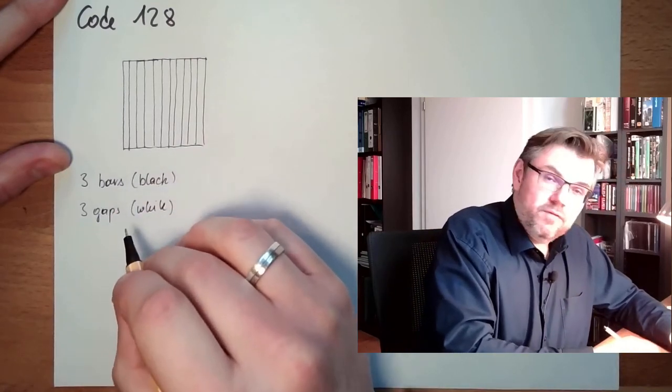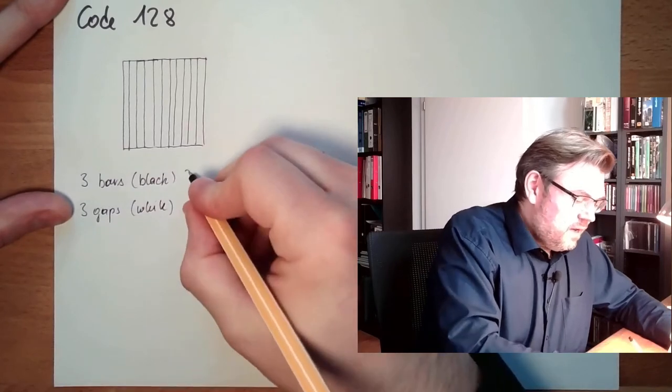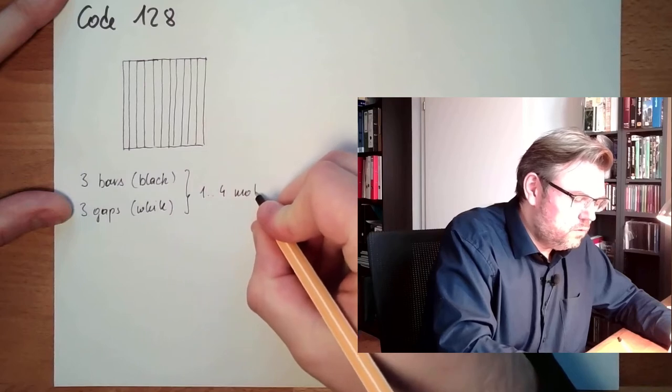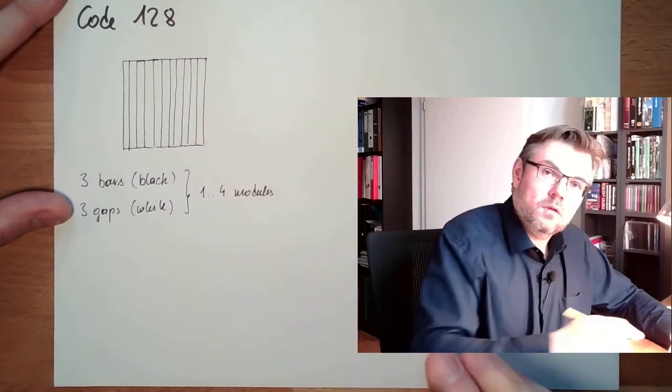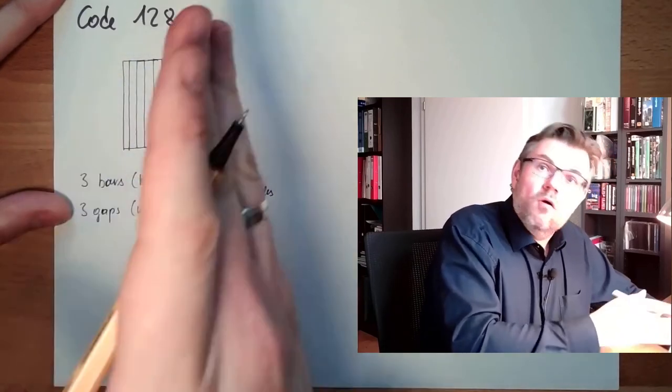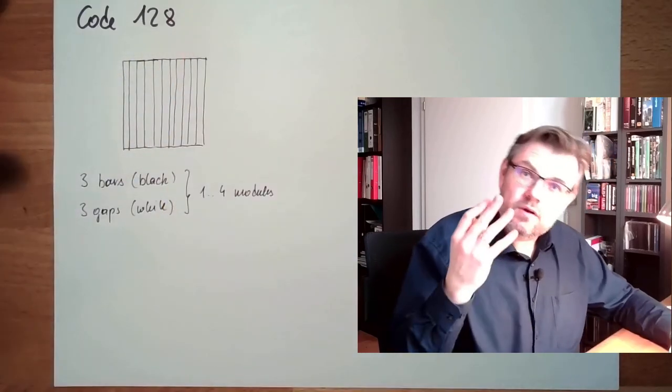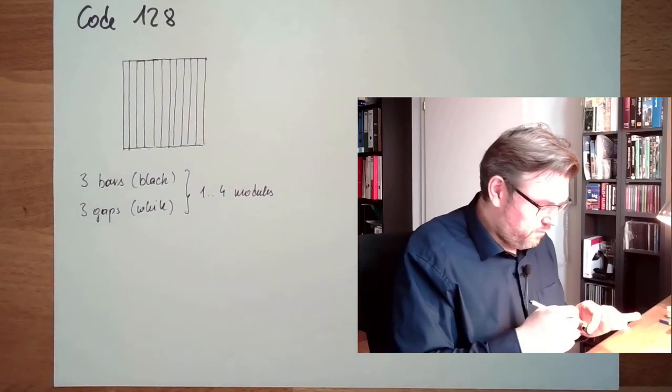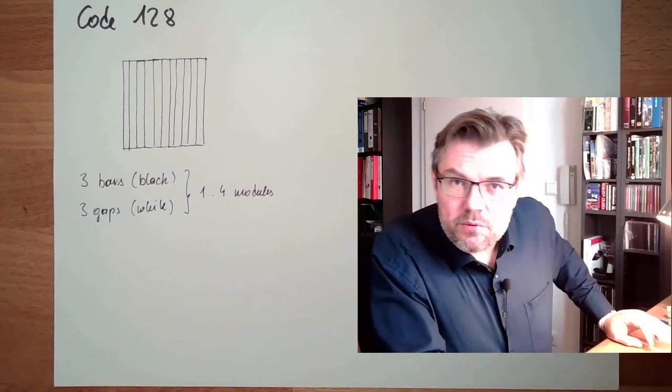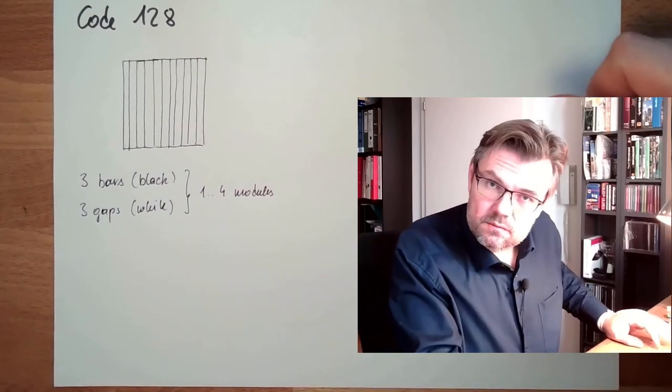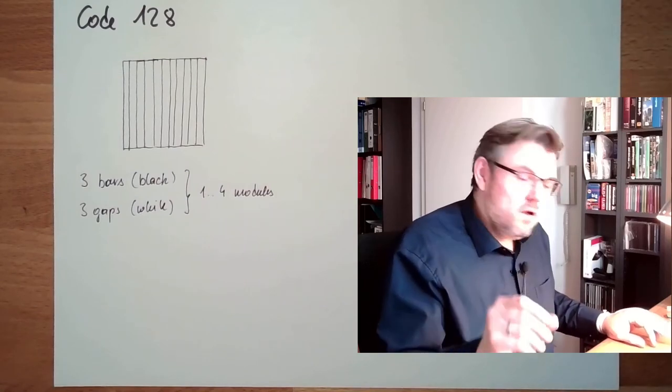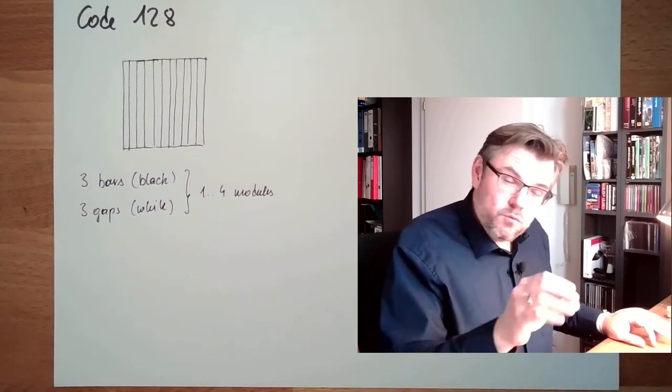Each of these bars and gaps has a width of one to maximum four modules. So I can have a bar which is one module broad, two, three, or four. Four different thicknesses of bars and gaps. This means we would need higher accuracy in printing compared to three of nine, simply because I have to determine four different widths.